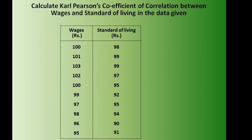We will calculate Karl Pearson's Coefficient of Correlation between wages and standard of living using the data given below. Wages: 100, 101, 103, 102, 100, 99, 97, 98, 96, 95. Standard of living: 98, 99, 99, 97, 95, 92, 95, 94, 90, 91. We will solve this using two models — the direct method and the shortcut method — worth 10 to 20 marks in the exam.